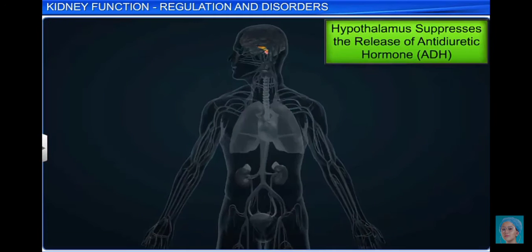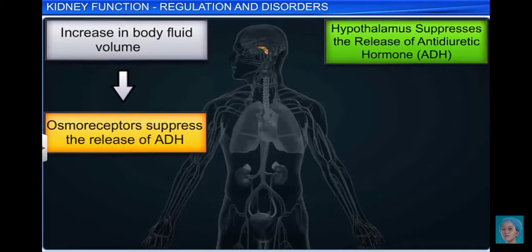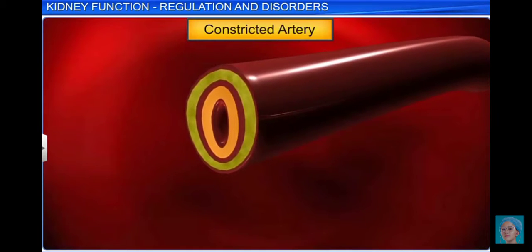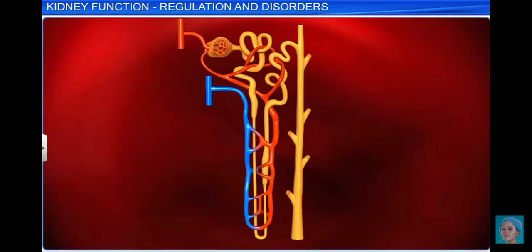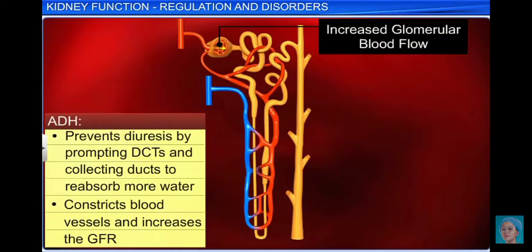On the other hand, if the fluid volume in the body increases, the osmoreceptors suppress the release of ADH, leading to increased excretion of water in urine. ADH also has the ability to constrict the blood vessels. This increases blood pressure, thereby increasing the glomerular blood flow in the kidney and consequently the glomerular filtration rate or GFR.